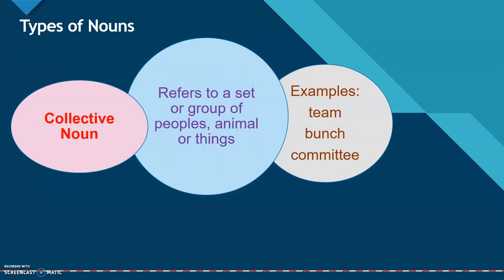Now, what about collective noun? They refer to a set of group of peoples, animals, or things. For example: team, bunch, committee. Collective nouns are words for single things that are made up of more than one person, animal, place, thing, or idea. You can't have a team without individual members.